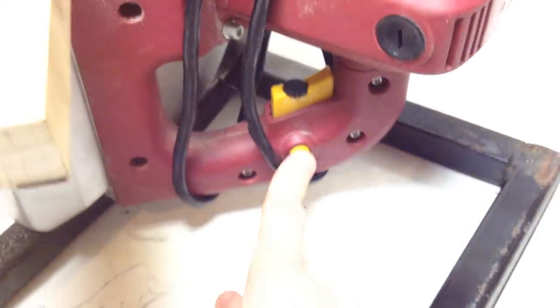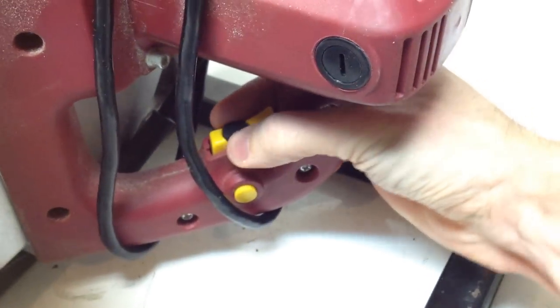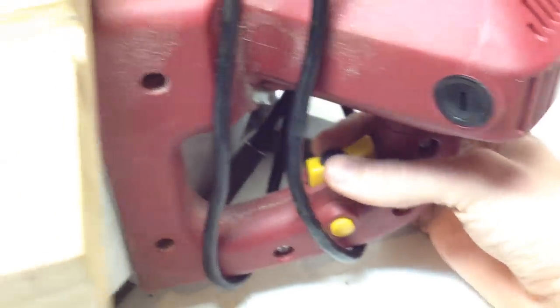This saw, there's a lot of reviews on this saw, but it's got the trigger lock on it. Pull and lock the trigger and lock it down. There's a little wheel here so you can adjust the speed. So that's pretty handy.